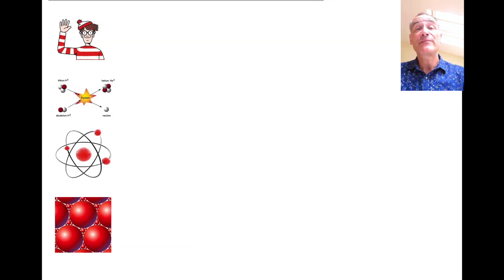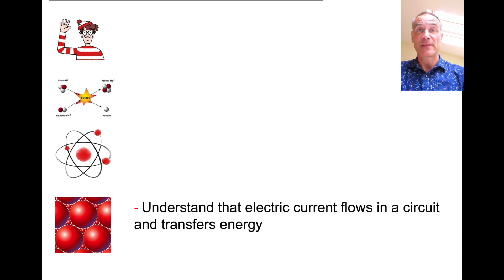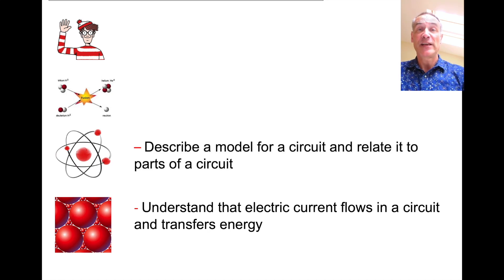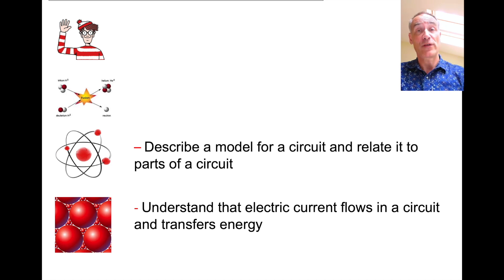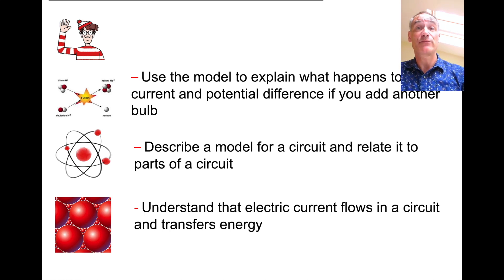Today we're going to be looking at how we model series circuits to explain what happens to current and voltage as you add bulbs in series. You should be able to understand how electrical current flows in a circuit and transfers energy. You should be able to describe a model for a circuit and relate it to the components it's modelling - for instance, the bulb or the battery. You should be able to use the model to explain what happens to current and potential difference when we add more bulbs in series.